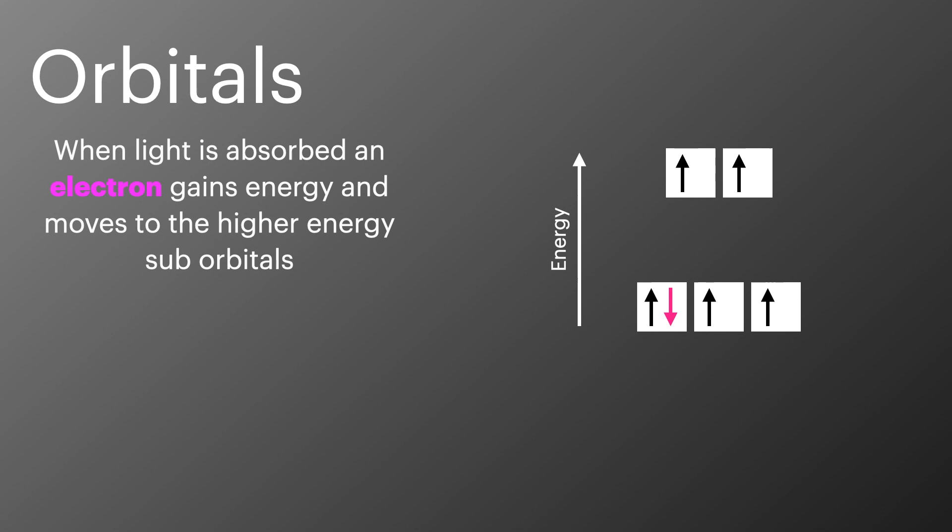When light is absorbed by a complex, it gives an electron energy to move from the ground state to the excited state, moving from a sub-orbital with a lower energy to a sub-orbital with a higher energy. This energy gap between the sub-orbitals is linked to the frequency of light absorbed.